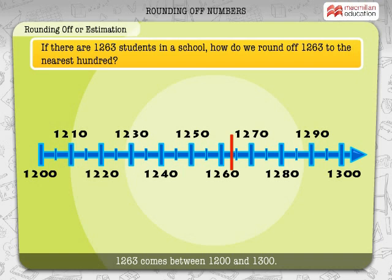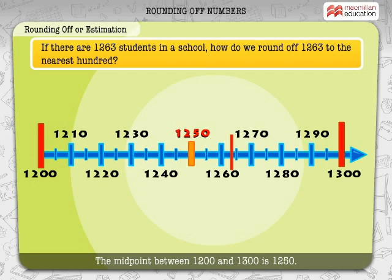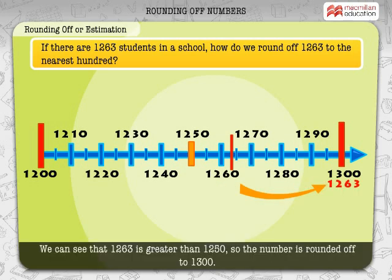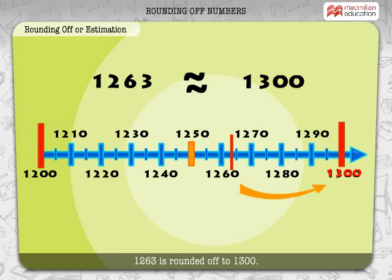1263 comes between 1200 and 1300. The midpoint between 1200 and 1300 is 1250. A number which is at the midpoint or greater than the midpoint is rounded off to the higher number. We can see that 1263 is greater than 1250. So, the number is rounded off to 1300. Thus, 1263 rounded off to the nearest 100 is equal to 1300.